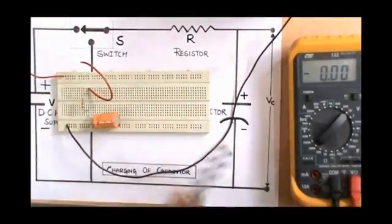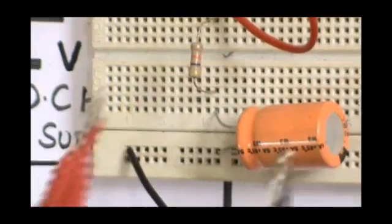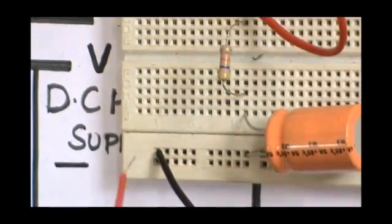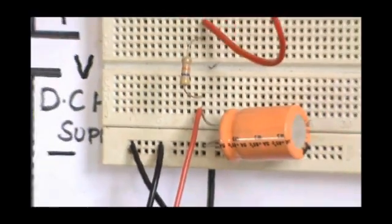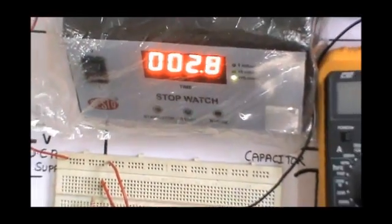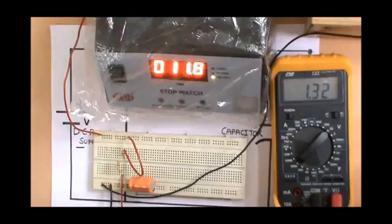The output is taken across the capacitor using a digital multimeter. Insert the positive terminal of the digital multimeter at the positive terminal of the capacitor, and the negative terminal of the multimeter at the negative terminal of the capacitor. Insert the switch and start the stopwatch simultaneously, so that the capacitor charges gradually.